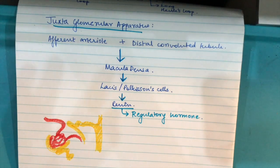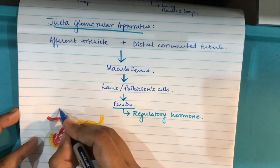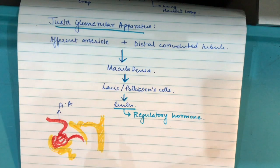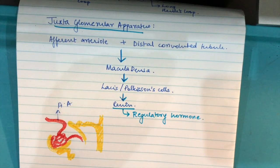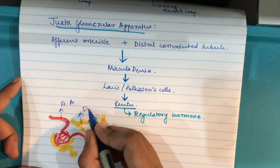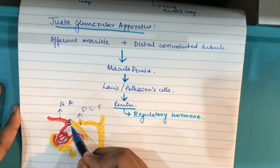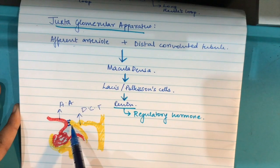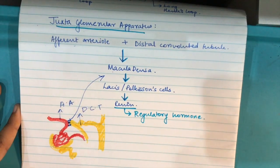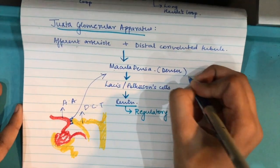We're done with that also. To the last and final part of today's class, that is juxtaglomerular apparatus. The name is big but don't worry it's a very simple concept. You know afferent arteriole - this is afferent arteriole. And you know distal convoluted tubule. In the previous drawing I have made it pretty far away but you know nephrons are really small. So these two structures, that is afferent arteriole and distal convoluted tubule DCT, are very close to each other. When they're so close to each other they have some cells which are attached to each other, that is cells of afferent arteriole and cells of distal convoluted tubule.